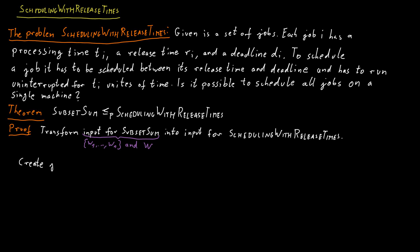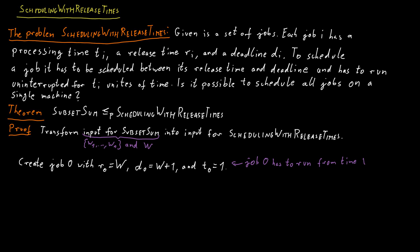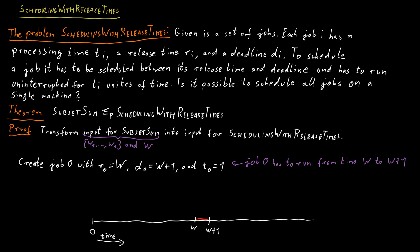We start by creating a job 0. The release time of job 0 is W, and the deadline of job 0 is W plus 1. The processing time of job 0 is 1. In any successful schedule, job 0 also has to be scheduled between its release time and its deadline. Since the release time and deadline are only one time unit apart and the processing time is also 1, there is really only one way to schedule this job: start it at time W and finish at time W plus 1.